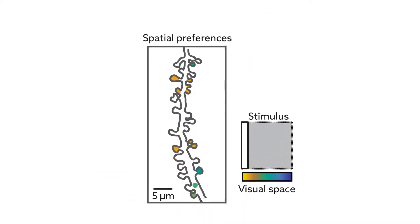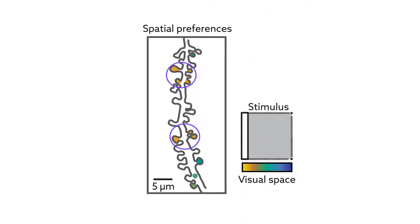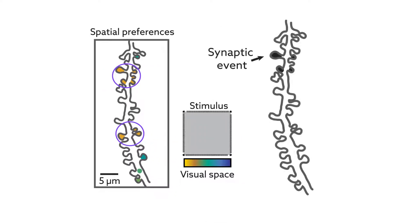The researchers then checked whether neighboring spines carrying similar signals would actually be co-activated by individual visual stimuli. They repeatedly showed ferrets the same stimulus and confirmed that neighboring spines within 5 microns were more likely to be co-activated.